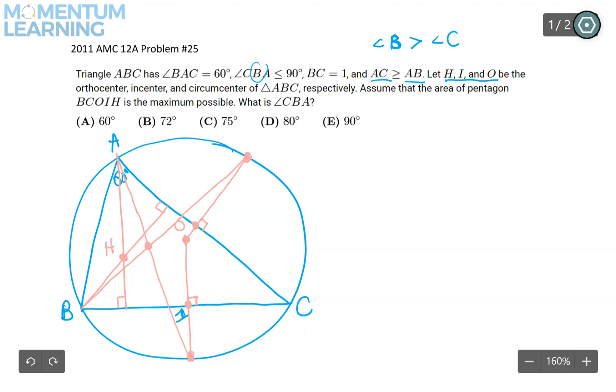Let me actually use a different color. So I is here. This one is O. Let me put it like this. So this is I, this is O, and this is H. All right, the question is, maximize the area of BCOIH.